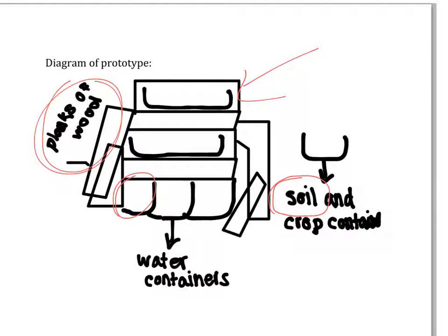Is it going to be the same in all of your countries? For your actual prototype, are you going to use the one that you already built? If so, what's the plan for actually planting stuff in it? What kind of seeds are you going to use? Do you need a grow light? Stuff like that.